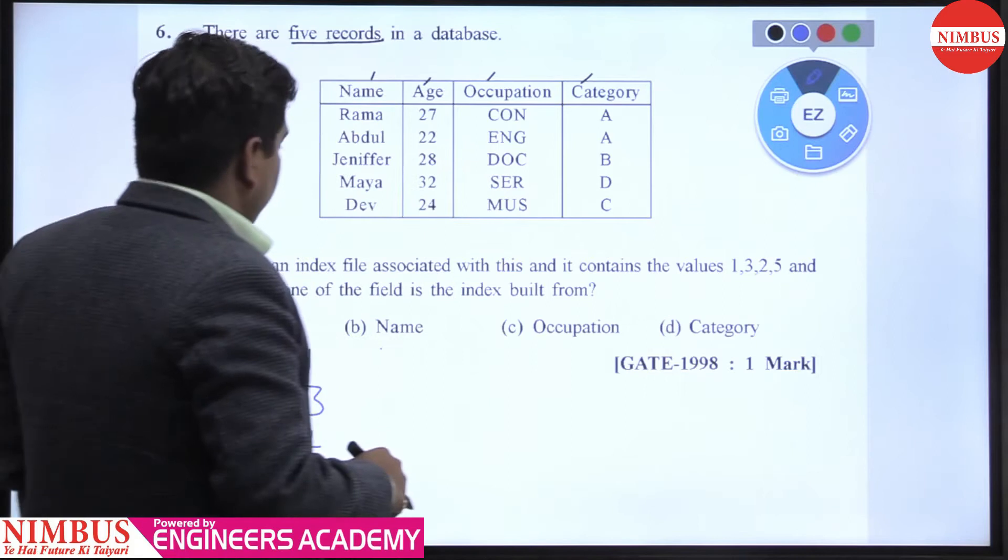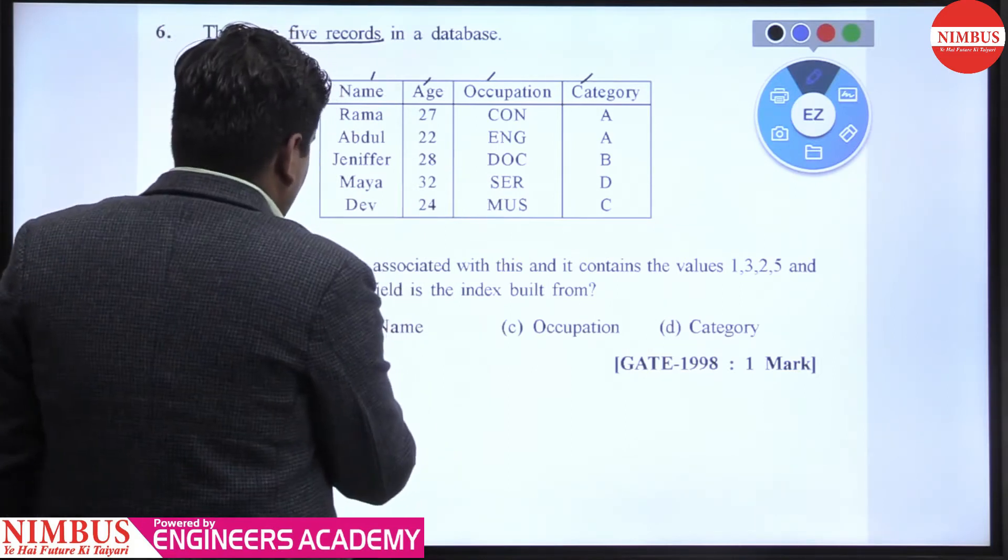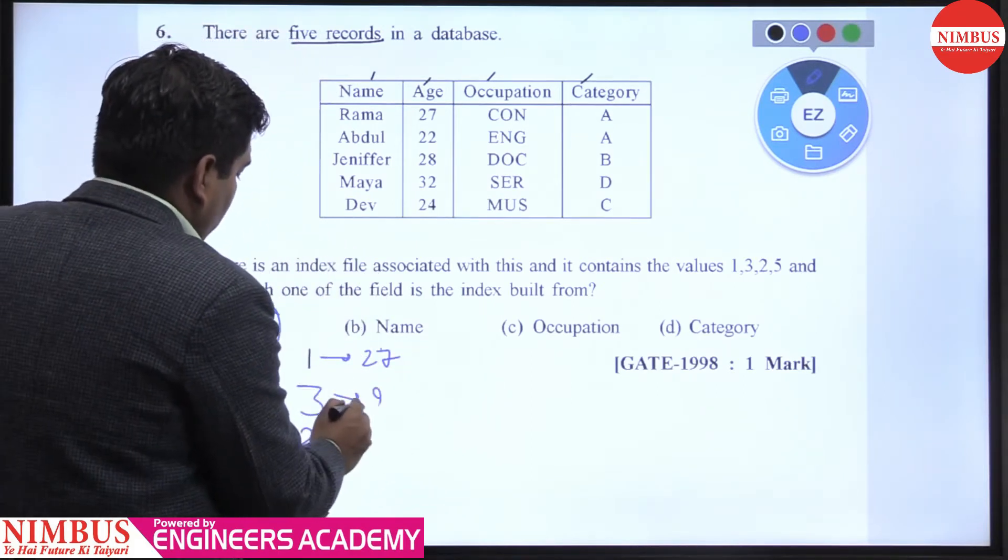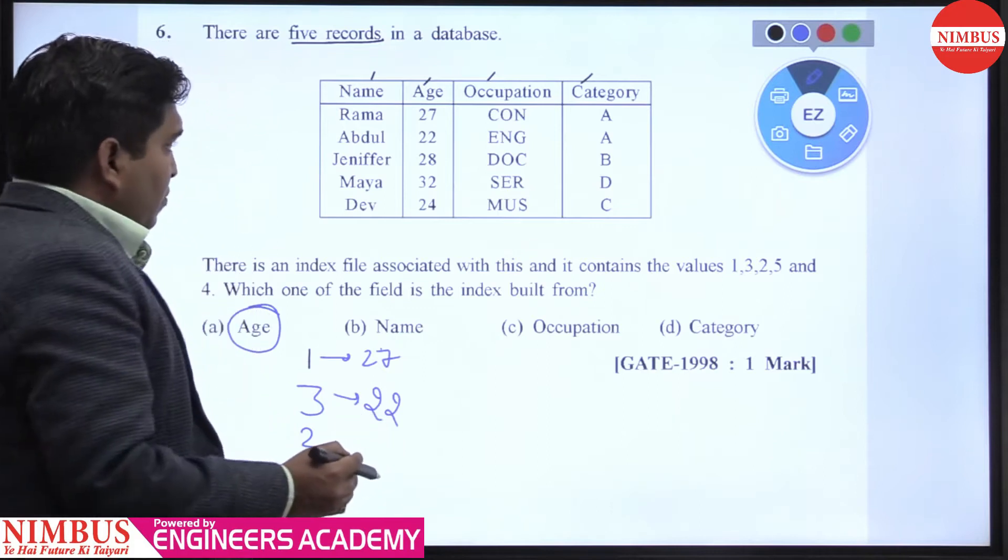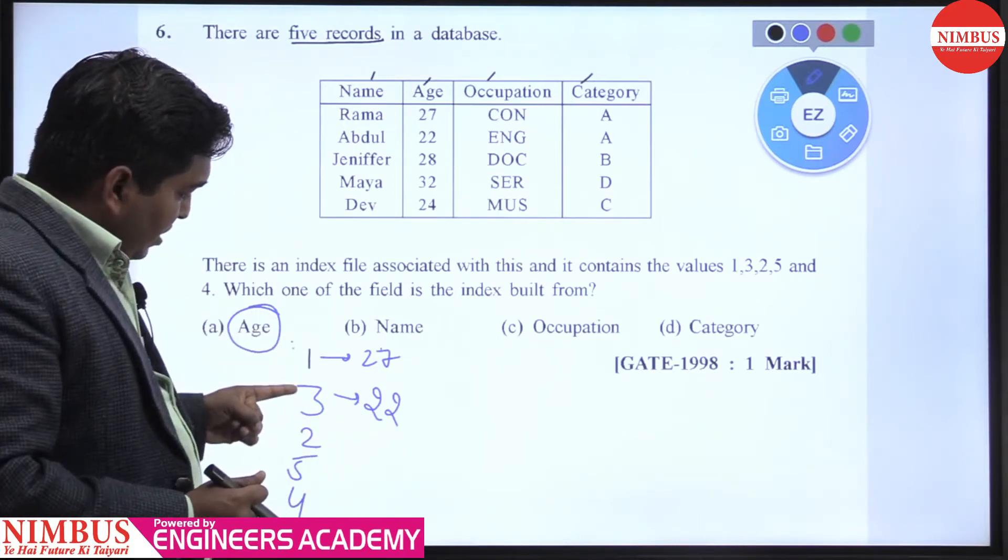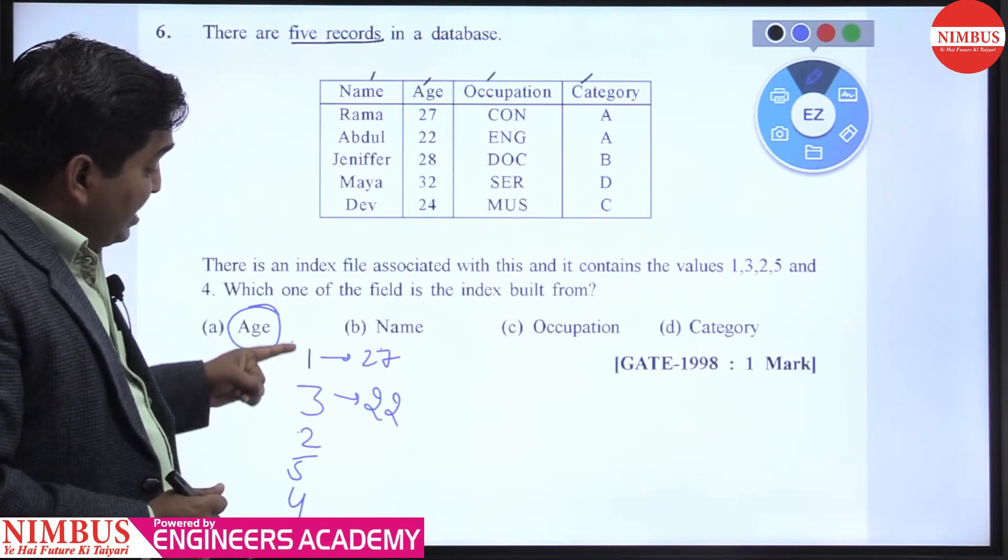We will discuss one by one. First, if we talk about age, one is given 27, and three is given 22. If we analyze these two, it appears that as the number increases, the age decrements. So whenever we are talking about two, this comes between 22 and 27.